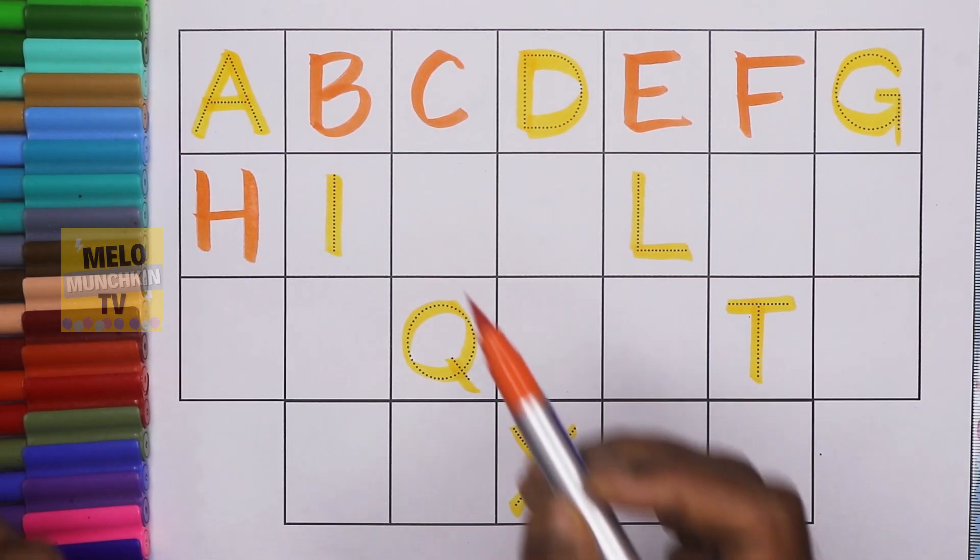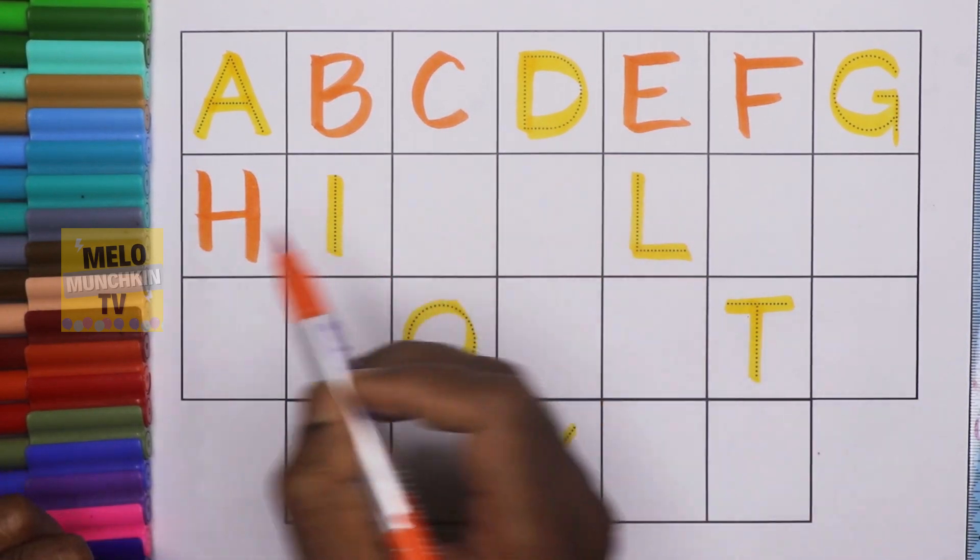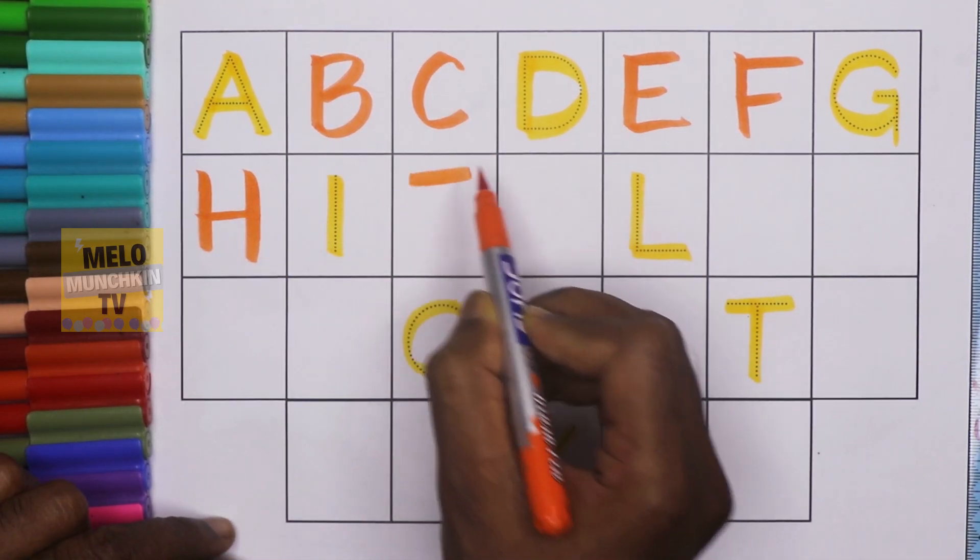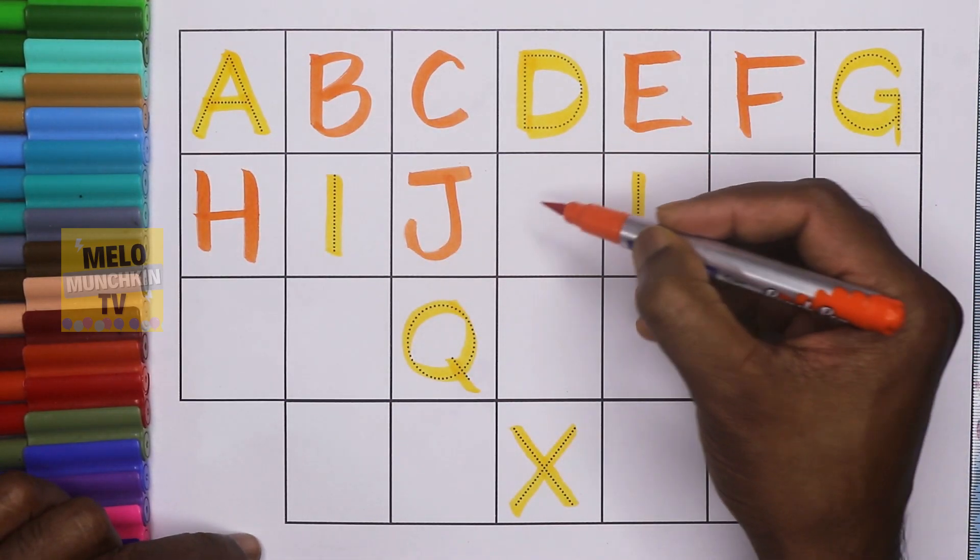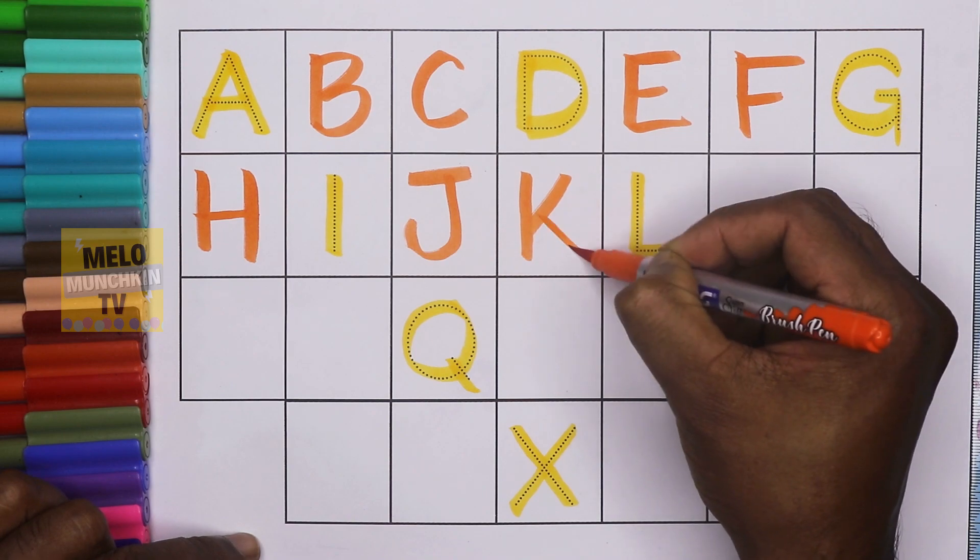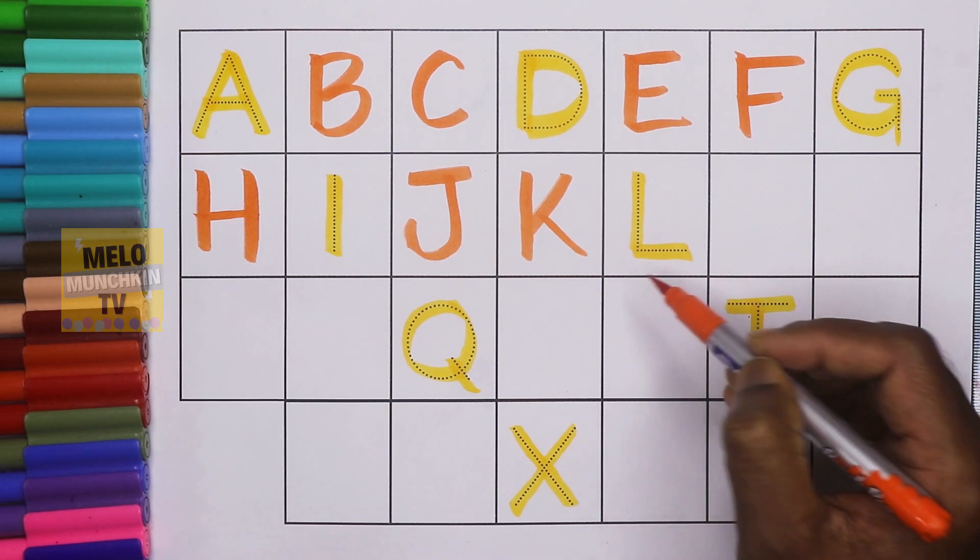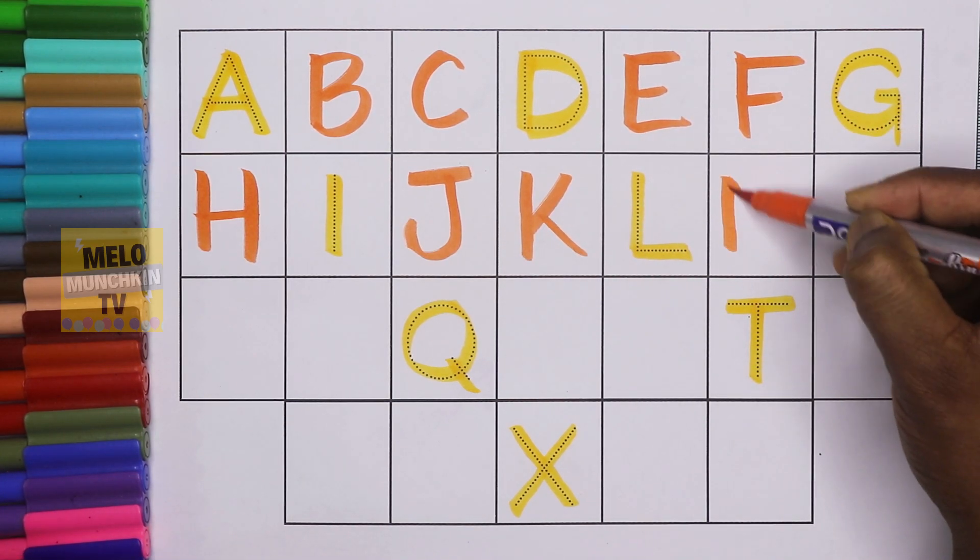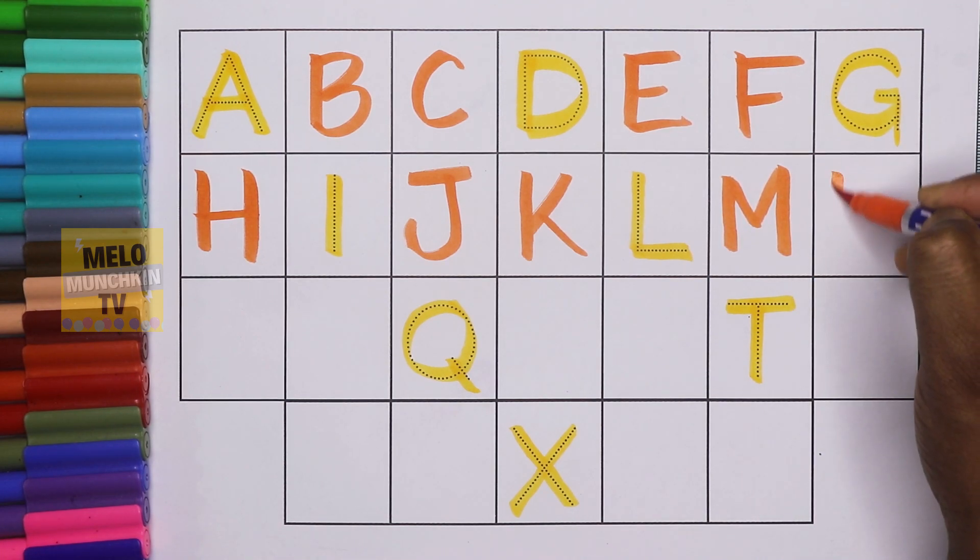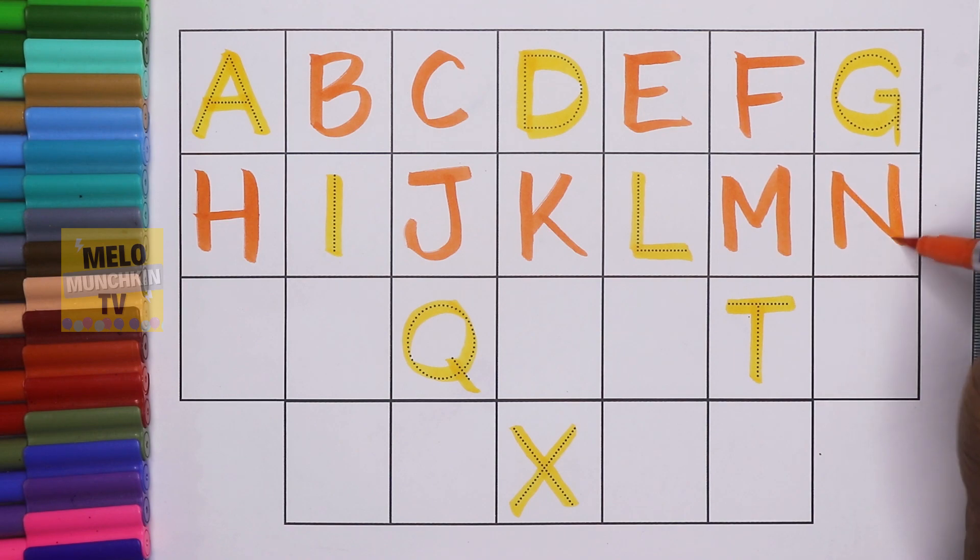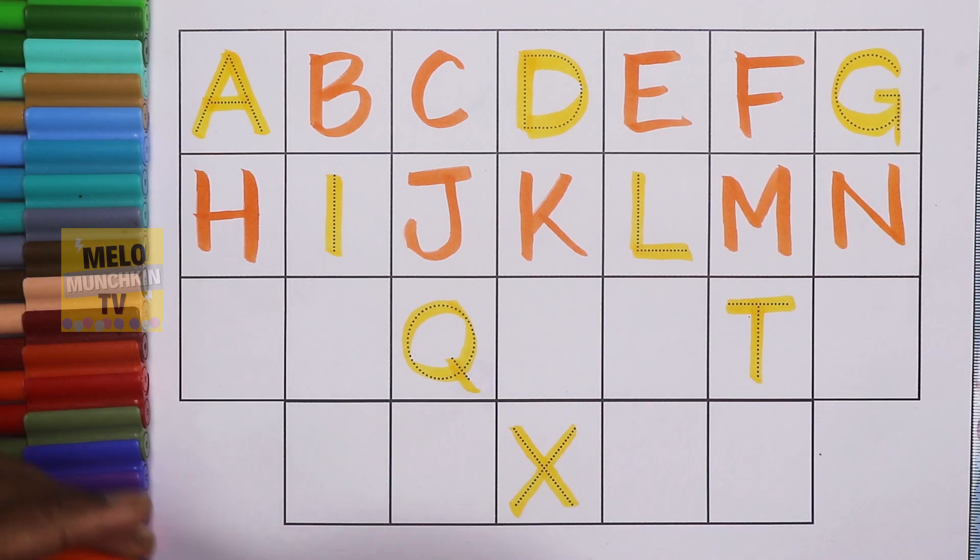After G it is H for house. After I, H I, J for jam. After J it is K for kite. After L it is M for monkey. After M, N for nest.